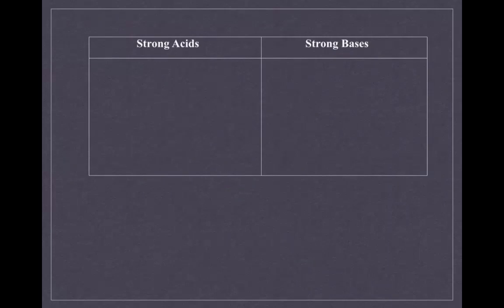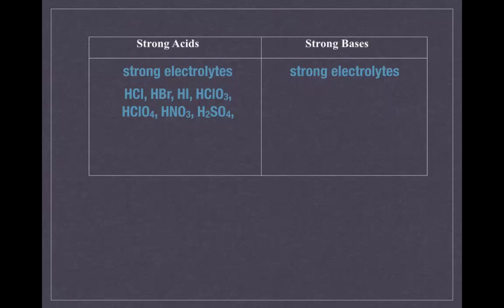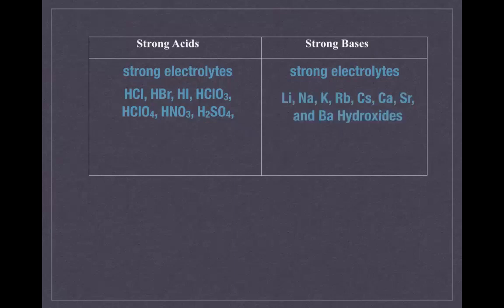What we're going to talk about now is strong acids and strong bases. A strong acid is one that is a strong electrolyte. The list of strong acids includes HCl, HBr, HI, HClO3, HClO4, HNO3, and H2SO4. You need to know these because they significantly influence your neutralization reaction. For strong bases, they include your group 1 metals with hydroxide, and also calcium, strontium, and barium.